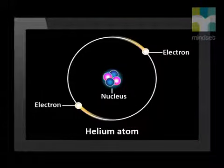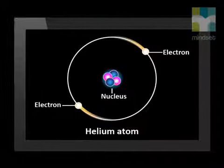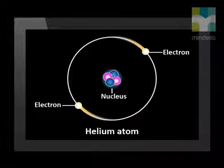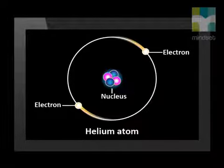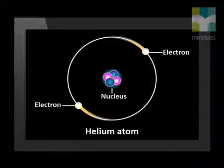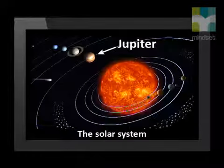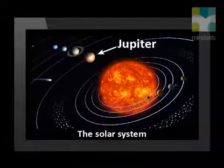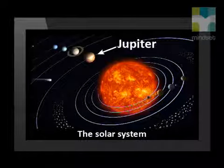In Rutherford's atomic model, he proposed that the electrons move around the nucleus. Here is the helium atom. Electrons orbit around the nucleus. This is similar to the way that the planets orbit the Sun in our solar system. Here we see the planet Jupiter in orbit around the Sun.